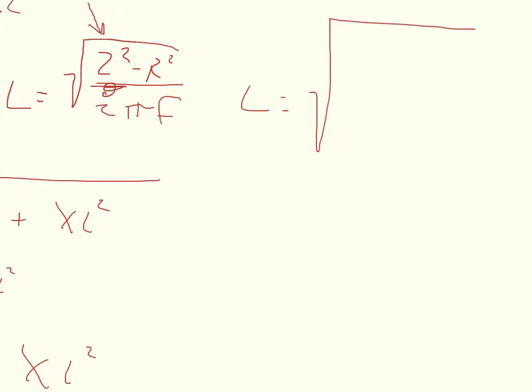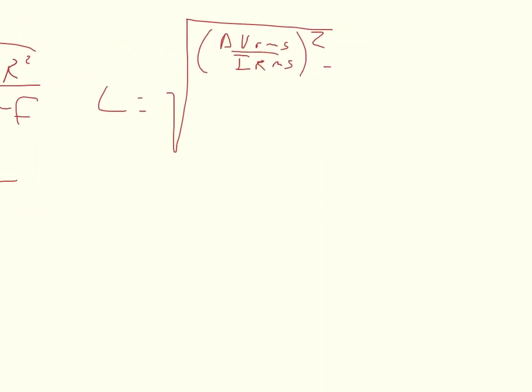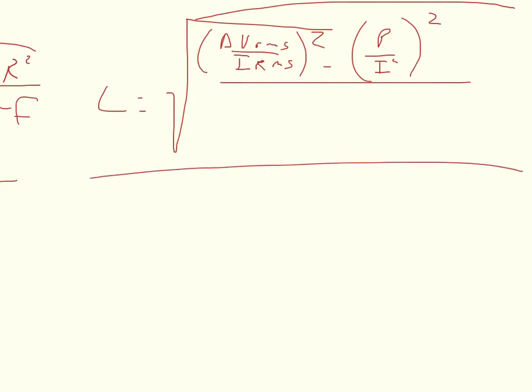So that was part one where we found the impedance. And that would be squared minus the power over the RMS current squared. And so that's all there. And then the whole thing is divided by 2 times pi times the frequency. And you get L. And when I do that, my professor tends to get upset. So that's why I do those kind of things.